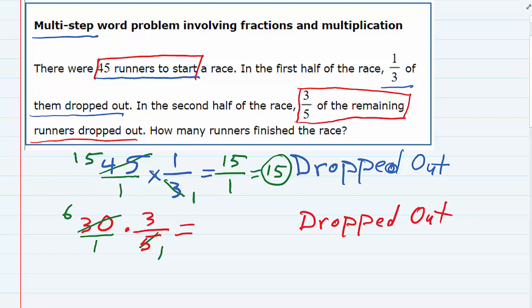So multiplying the top, 6 times 3 is 18. 1 times 1 is 1. So this time we had 18 drop out.